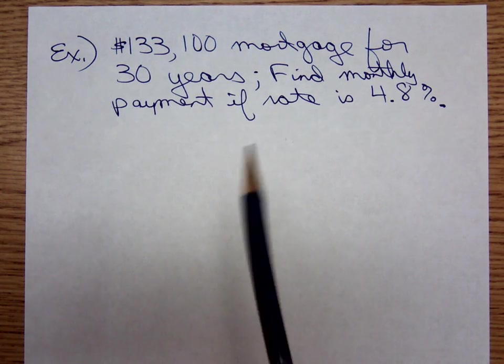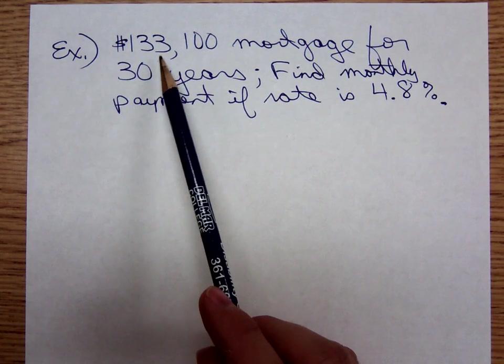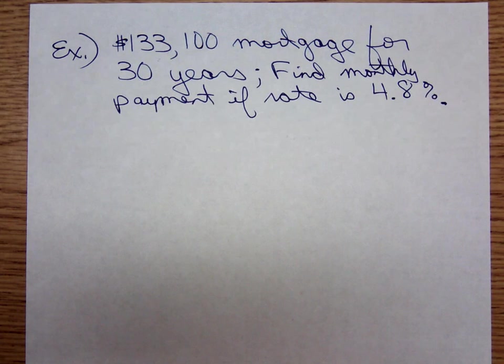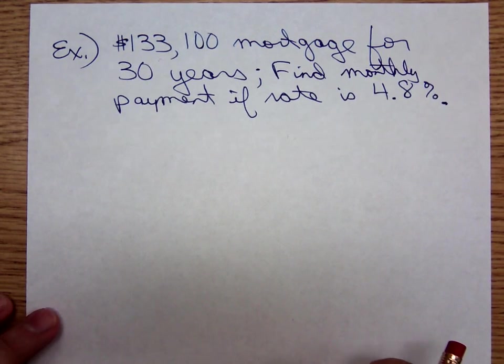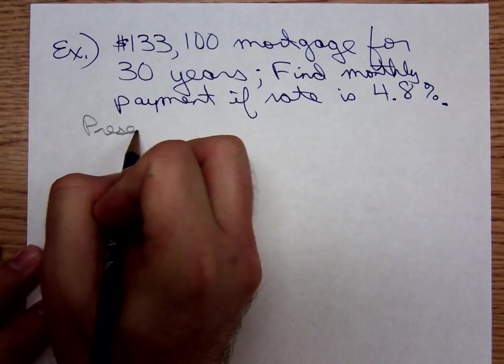Realize that the account balance, the lump sum, occurs at the present, at the beginning of the 30-year time period. The account balance, the mortgage, is $133,100. At the end of that 30-year time period, the account balance will have fallen to $0. So that's what tells us that we're going to have to use the present value of an annuity formula.